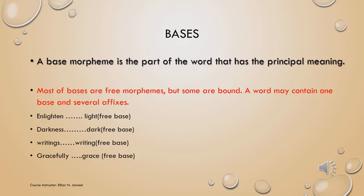The last example of free bases is 'gracefully.' Gracefully consists of three morphemes: grace, ful, and ly. Grace is a free morpheme because it is a word by itself — it can stand alone with meaning. Ful and ly are bound morphemes because they cannot stand alone with meaning. The base of this word is grace, because the word gracefully comes from grace. There is a direct meaning relationship between gracefully and grace, not with ful or ly. And because grace is a free morpheme, it is a free base.